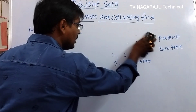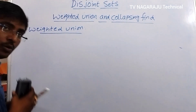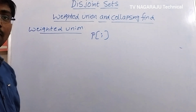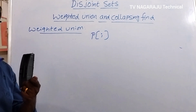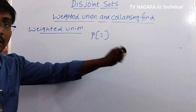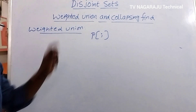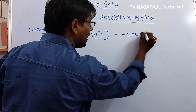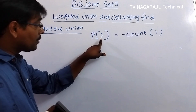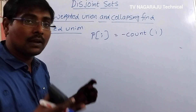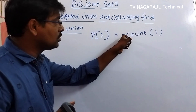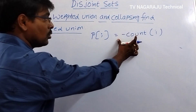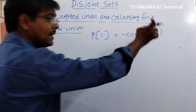In weighted union, in the normal union we maintain a P(I) value, where I is a node and P(I) is equal to the parent node. For the root node, in simple union P(I) is equal to minus 1. But in weighted union, P(I) is equal to minus count(I). That means the root node value is equal to minus the total number of nodes in that tree.